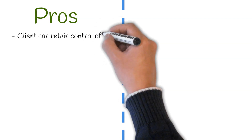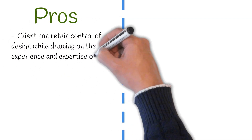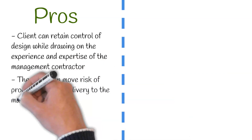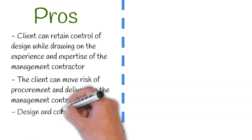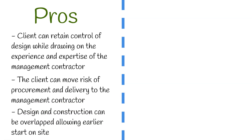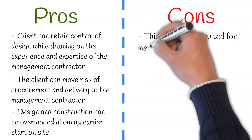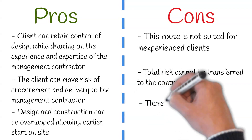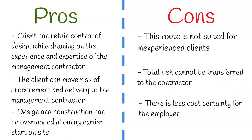Pros to this route include: the client can retain control of design while drawing on the experience and expertise of the management contractor. The client can move risk of procurement and delivery to the management contractor, and design and construction can be overlapped, allowing an earlier start time on site. Cons include: this method is not suited for inexperienced clients, total risk cannot be transferred to the contractor, and there is less cost certainty for the employer.